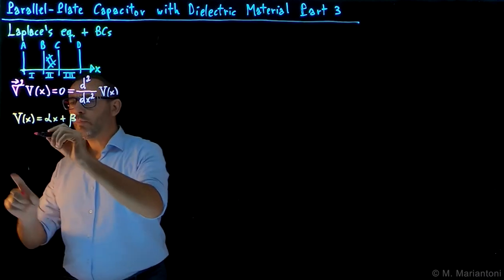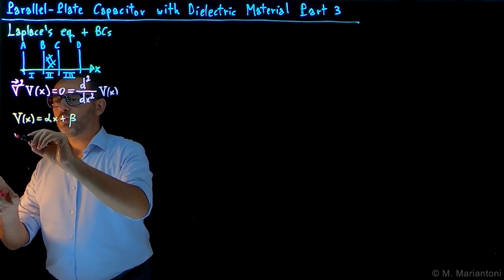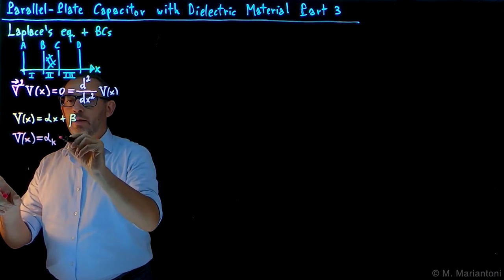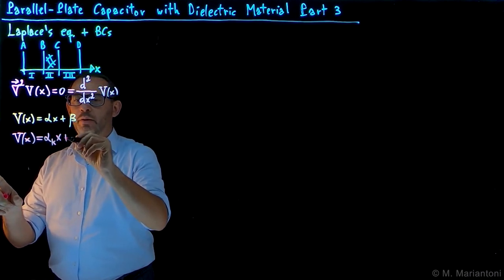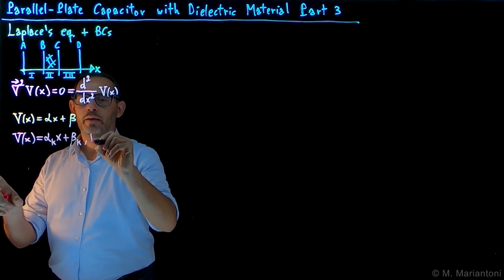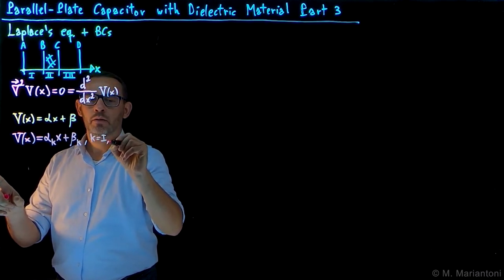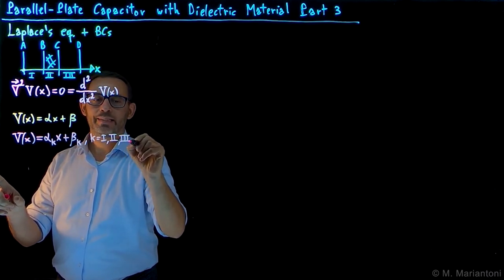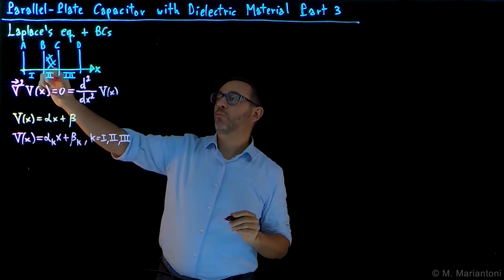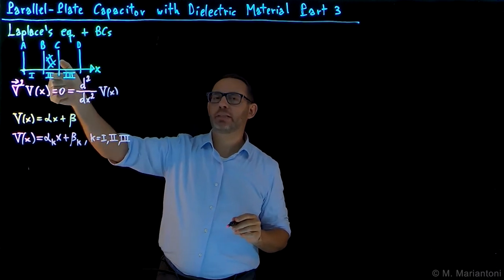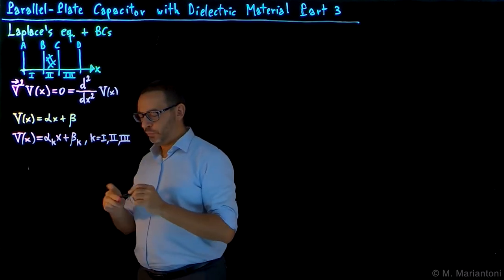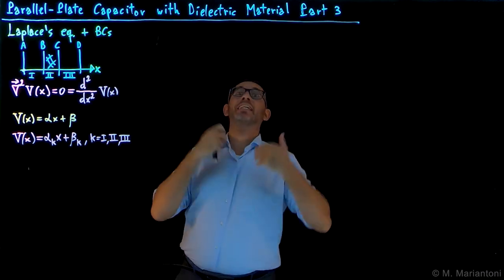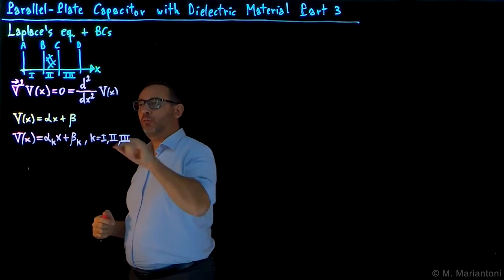We solve Laplace's equation in each of these regions. We write V(x) = α_k·x + β_k, where k can be 1, 2, or 3, selecting the region we are looking at. Region one is vacuum, region two is the dielectric material, and region three is vacuum again. This is the general solution, and we want to find α and β for k = 1, 2, 3 — six parameters total, two for each region.